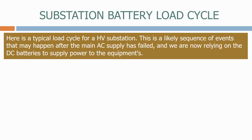Here is a typical load cycle for the HV substation. This is a likely sequence of events that may happen after the main AC supply has failed and we are now relying on the DC batteries to supply power to the equipment.